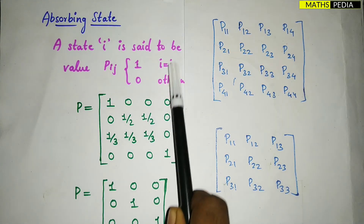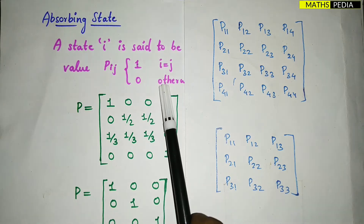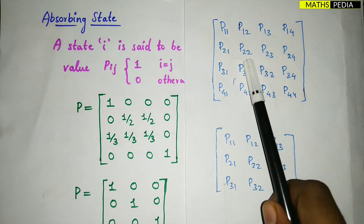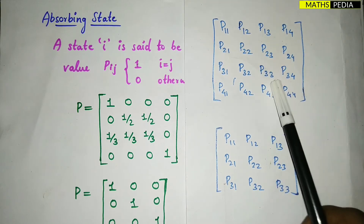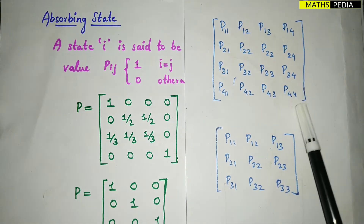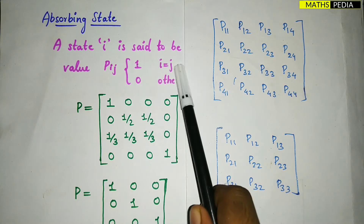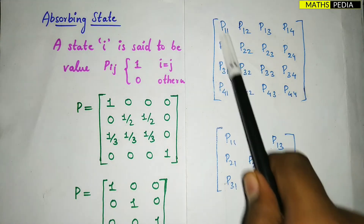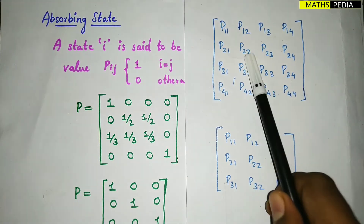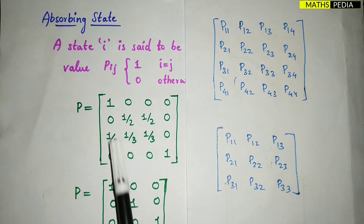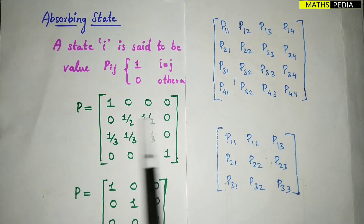So the Pij meaning — if the i and j values are equal, that means we have to look at P11, P22, P33, and P44. Otherwise it should be 0. The main thing here is that for the absorbing state you have to see row-wise — you have to compare and check each row.